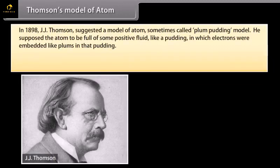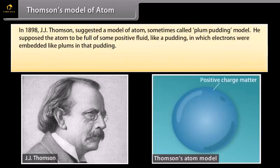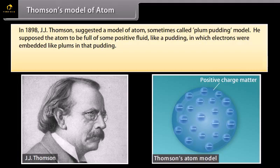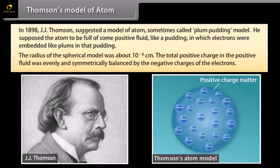Thomson's model of atoms: In 1898, J.J. Thomson suggested a model of atoms, sometimes called the Plum-Pudding model. He supposed the atom to be full of some positive fluid, like a pudding, in which electrons were embedded like plums. The radius of the spherical model was about 10 raised to the power minus 8 cm. The total positive charge was evenly balanced by the negative charges of the electrons. This model was discarded because it failed to satisfy the results of Rutherford's experiments.